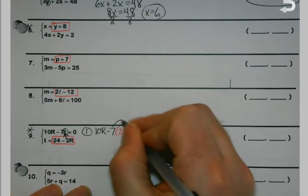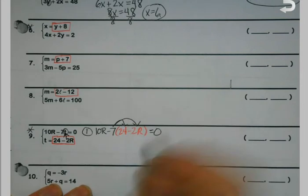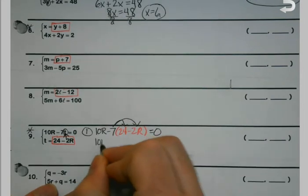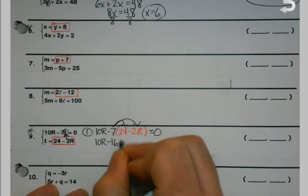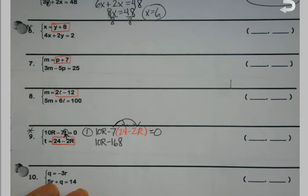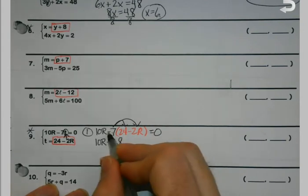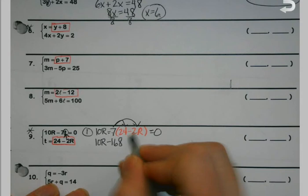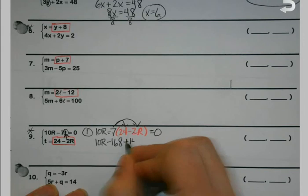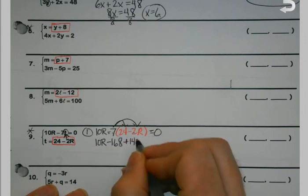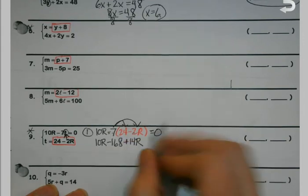And this definitely may be some calculator help here. Negative 7 times 24 is negative 168. Negative 7 times negative 2. It's those little things that can mess you up on this if you're not careful. Negative times negative is positive.